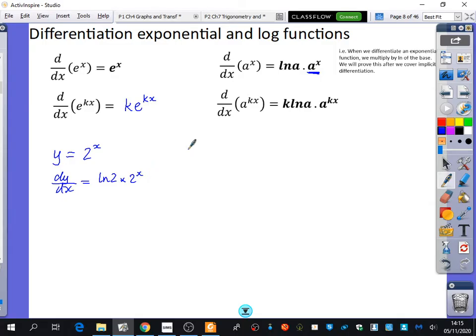If I had another one as an example, let's say I had y was equal to 3 to the power of 4x. Well, using this rule, I would say that I still am going to have the 3 to the power of 4x. But I'm also going to have 4 ln 3 multiplied by 3 to the power of 4x.